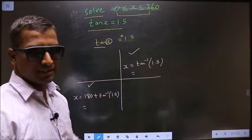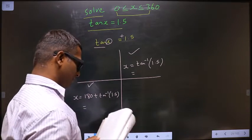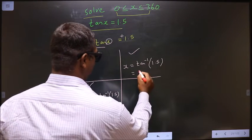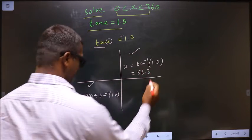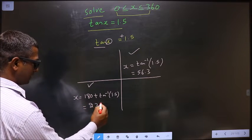You put this in the calculator, you should get 56.3. You put this in the calculator, you should get 236.3.